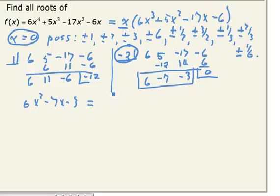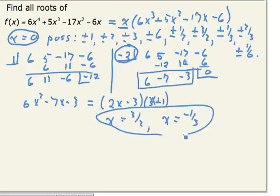We can factor that and get 2x minus 3, 3x plus 1. So we get x equals 3 halves, and x equals negative 1 third as the remaining zeros.